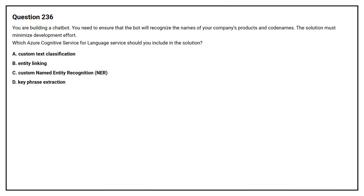Question number 236. You are building a chatbot. You need to ensure that the bot will recognize the names of your company's products and code names. The solution must minimize development effort. Which Azure Cognitive Service for language service should you include in the solution? Option A: Custom Text Classification. Option B: Entity Linking. Option C: Custom Named Entity Recognition (NER). Option D: Key Phrase Extraction.